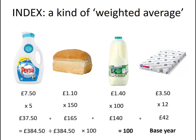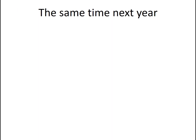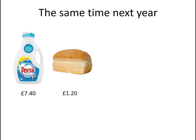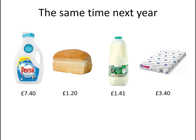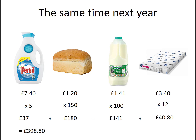Now, if I go back to the same shop a year later and buy exactly the same basket of items, I find that washing powder's gone down a bit, bread's gone up, milk's gone up a very little, and paper's gone down. Does that mean that in general prices are going up for me or down for me? What I do is I apply exactly the same weightings as I did before, do all the multiplications, add them all up. It's a higher figure, but I still divide by the same factor I used last time and multiply by 100. And I get a new index of 103.7. That means my basket of items has been going up in price at the rate of 3.7% per year. That is my inflation rate for this particular basket of goods.